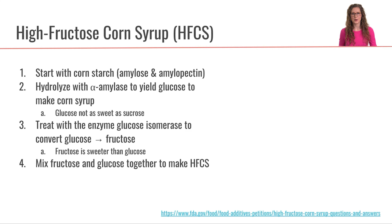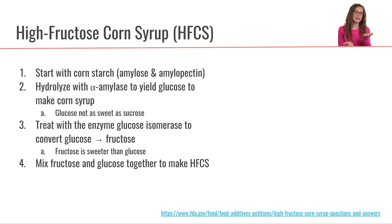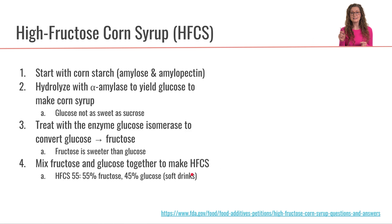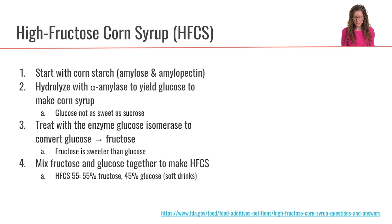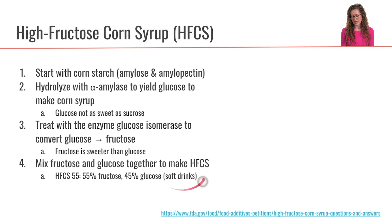The reason we want to do that is because fructose is sweeter than glucose. We can then mix the fructose together with glucose to make different concentrations of high fructose corn syrup with different proportions of fructose to glucose. One type is called HFCS 55, composed of 55% fructose and 45% glucose. This is the type used in soft drinks.